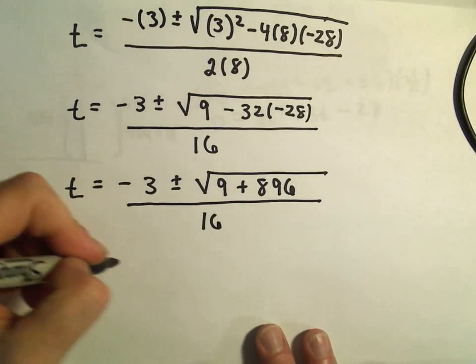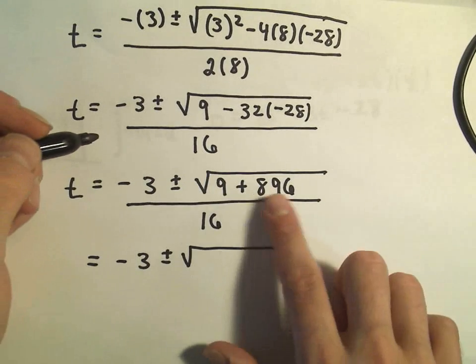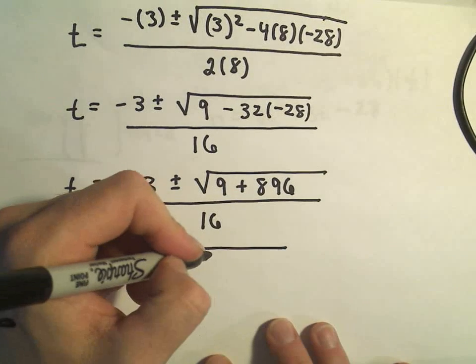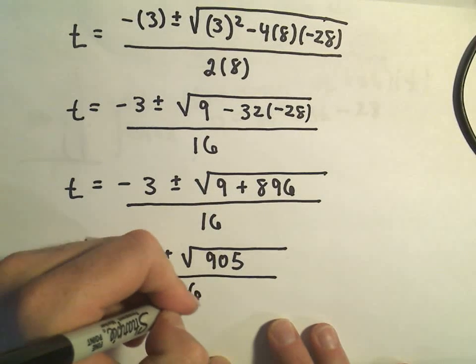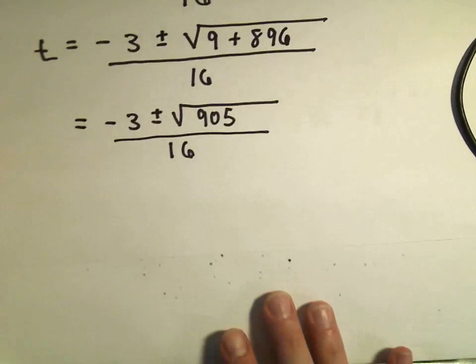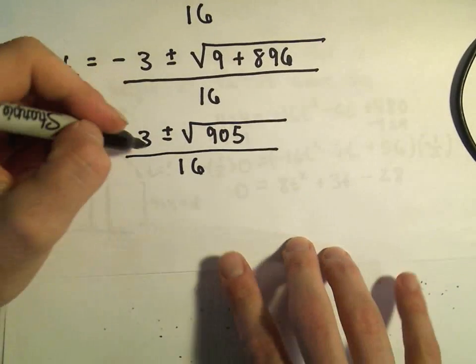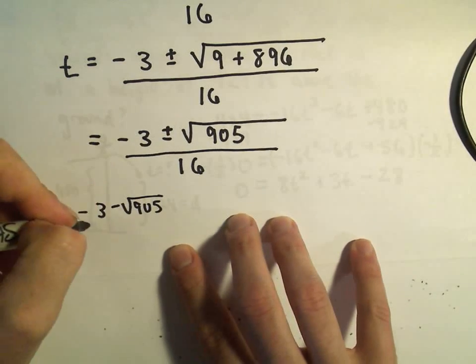So we're getting a little bit closer, that's negative 3 plus or minus, 896 plus 9, that would be 905, over 16, and again to our quadratic equation we have 2 solutions.